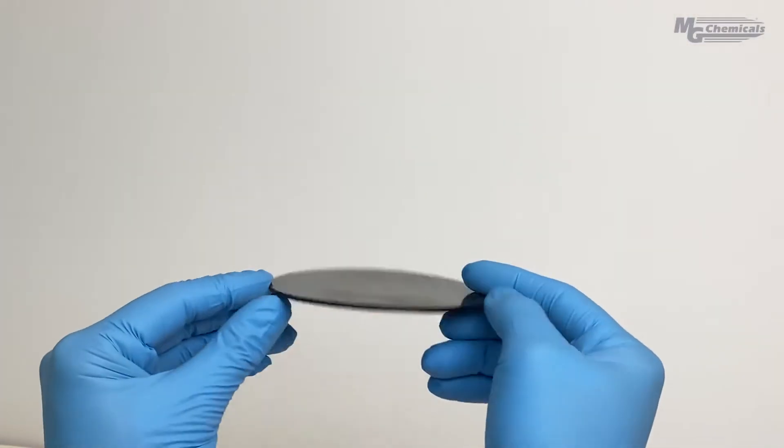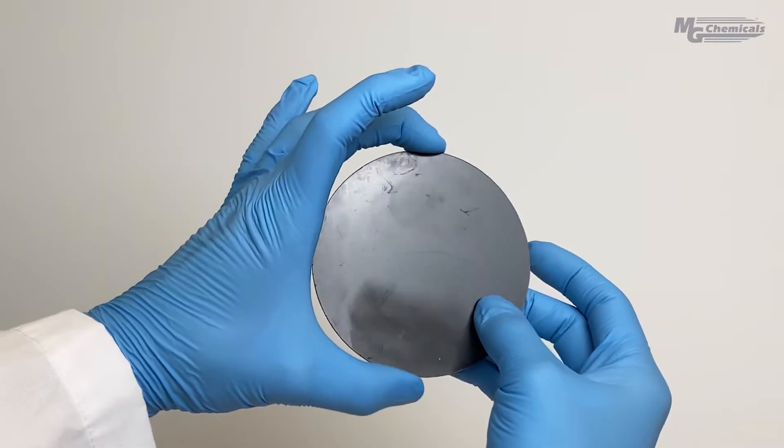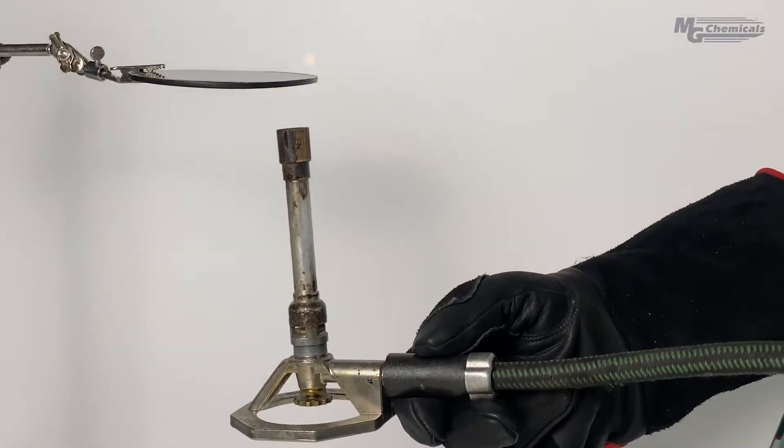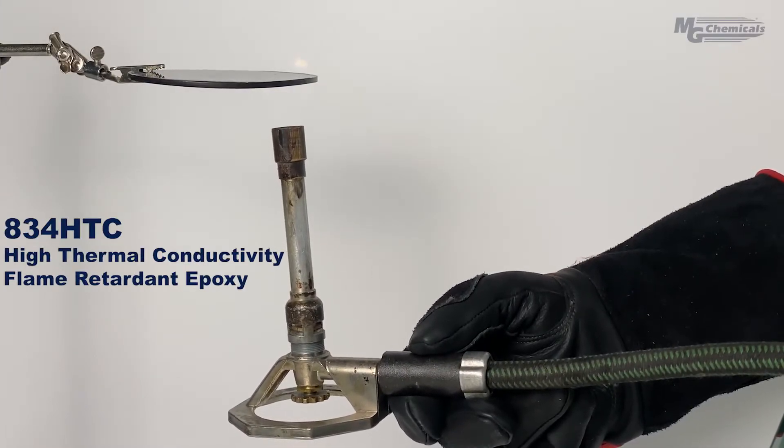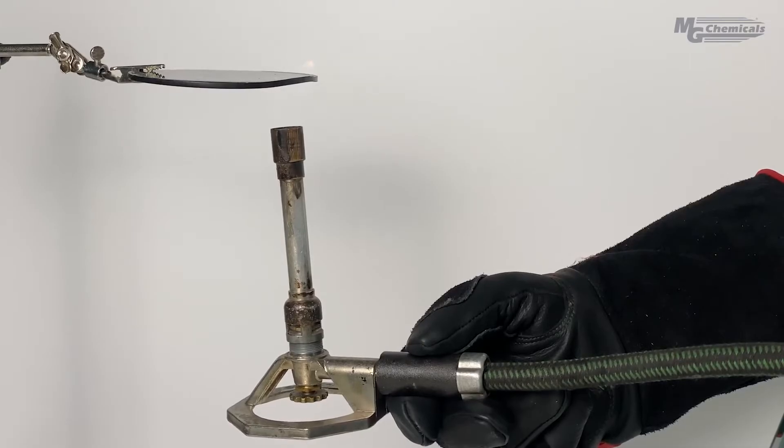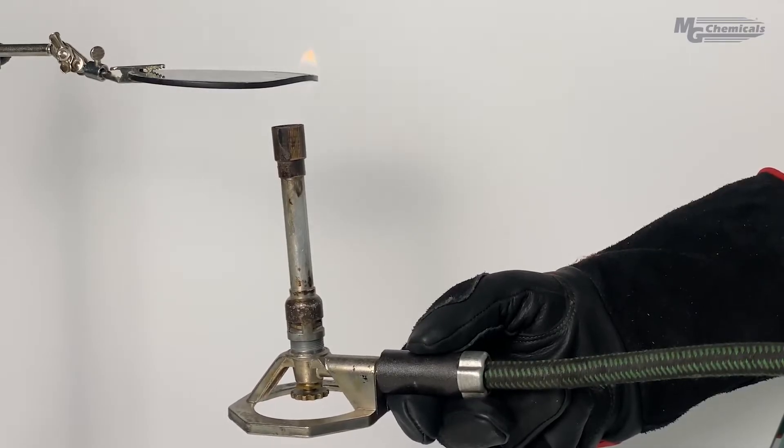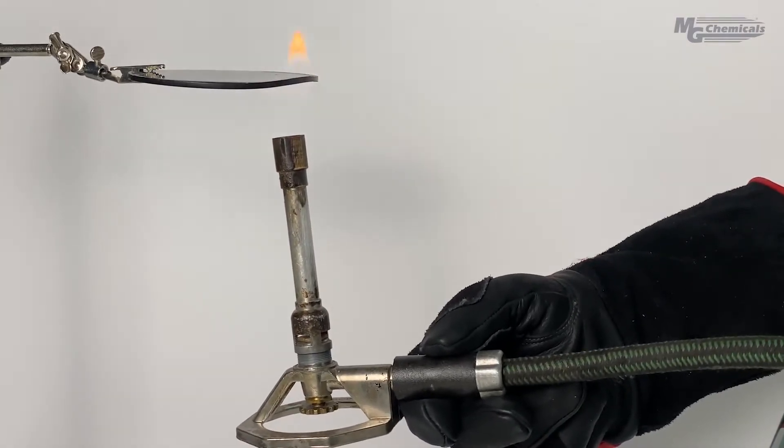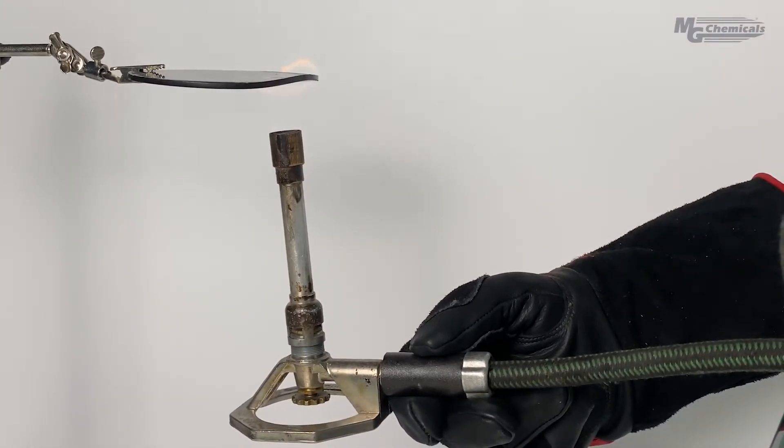The horizontal burn test changes the setup slightly by placing the sample on a horizontal plane. A flame is introduced at one end of the sample, and the rate at which it takes the flame to spread to the other end is timed. A specimen is considered compliant if the rate of flame spread is less than 40 mm per minute or 75 mm per minute, depending on the sample thickness.